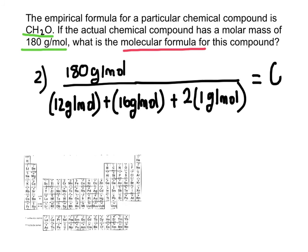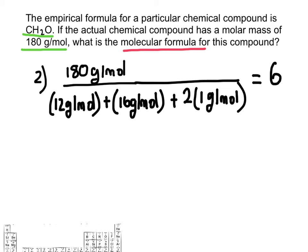So that's telling us that the molar mass of the actual chemical is 6 times greater than this right here. So what we have to do is just multiply all these subscripts by 6.